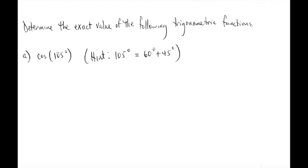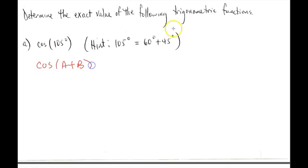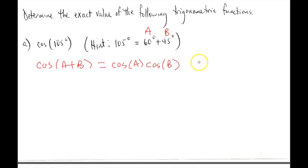Now we're asked to determine the exact value of a trigonometric function given in degrees. The hint is that 105 degrees equals 60 degrees plus 45 degrees. So here we know that cosine(A+B), calling 60 degrees A and 45 degrees B, equals cosine(A)cosine(B) minus sine(A)sine(B).